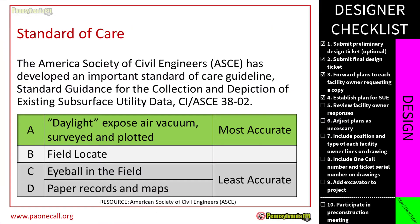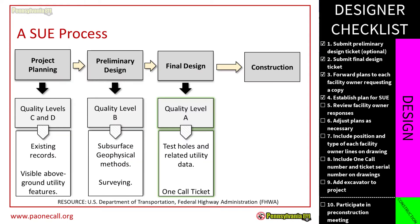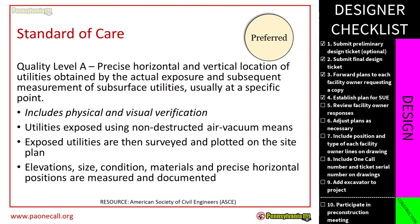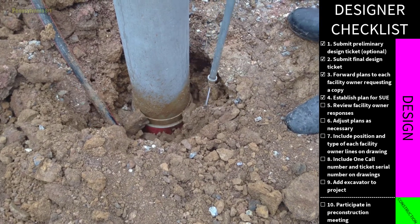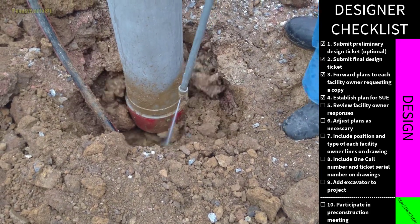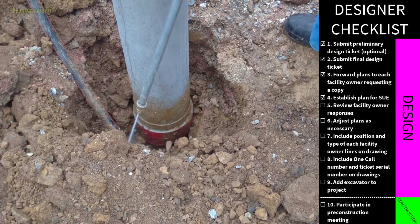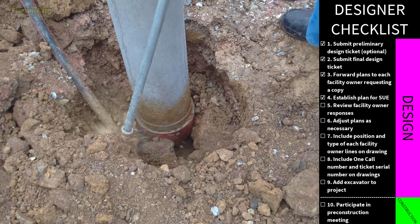The American Society of Civil Engineers has established four SUE quality levels ranging from least to most accurate. Levels C and D — eyeballs in the field and paper records and maps — are ideal for the planning phase. During preliminary design, quality level B (field locating) is used, bringing in a private locator to survey the worksite. In the final design phase, level A — the most accurate standard of care — uses soft excavation techniques like air vacuuming to create test holes, daylight those facilities, and determine their exact locations. SUE results are integrated into design plans to accommodate existing infrastructure and reduce the risk of conflicts or damage.